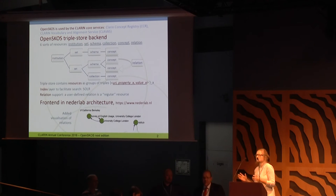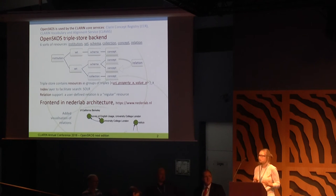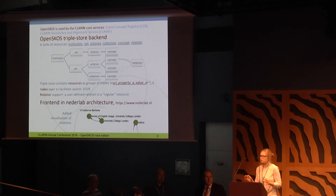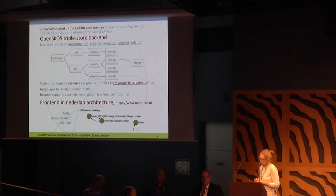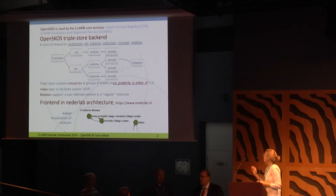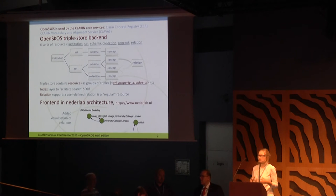The backend, which is the database where the content actually lives and the software to get access to this database, and the frontend, which is a web user interface connecting to the backend. The backend of the new version of OpenSCOS is based on a triple store, another name of which is an RDF store.